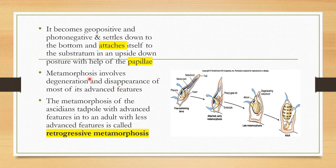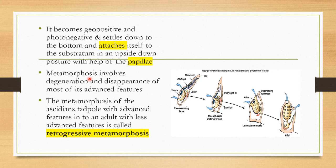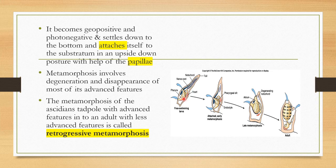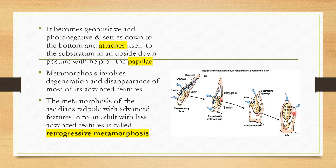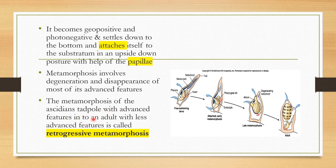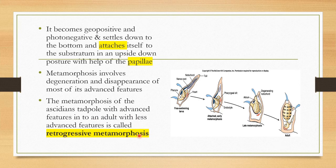In the metamorphosis it involves degeneration and disappearance of most of its advanced features. This larva possesses a lot of characters like nerve cord, notochord, heart, all those things. But as it proceeds from the larval stage to the adult, most of its characters gradually disappear, so they degenerate. You can see in the picture, the metamorphosis of ascidian tadpole with advanced features into an adult with less advanced features is called retrogressive metamorphosis.